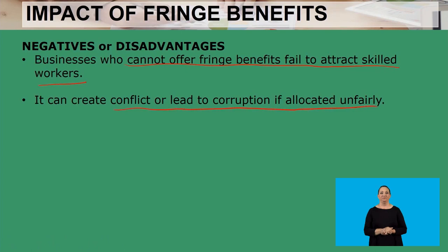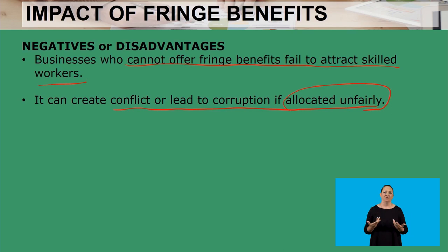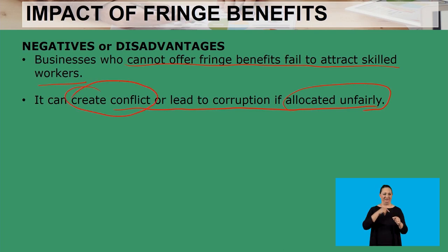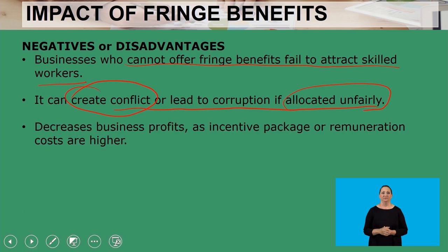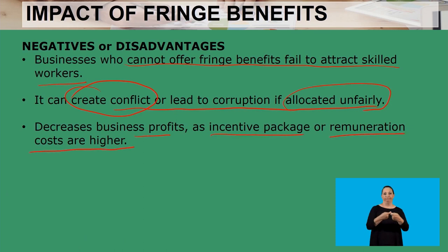Fringe benefits can create conflict or lead to corruption if they are allocated unfairly. For example, if worker A gets a car allowance but worker B does not, this creates conflict in the workplace. Fringe benefits also decrease business profits as incentive package or remuneration costs are higher — it is costly, and it requires the business to be financially stable in order to continue offering these benefits.